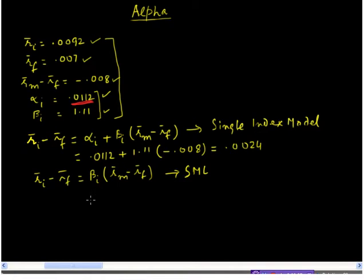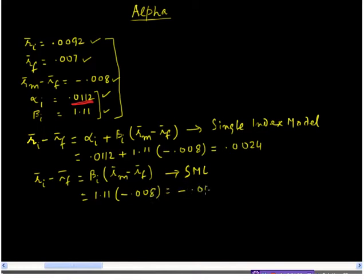Let us see what the CAPM predicts for our security. Using the SML equation with beta of 1.11 and average excess market return of minus 0.008, the calculator result is minus 0.0088. This predicted return from the CAPM is very different from what we got before from the single index model.